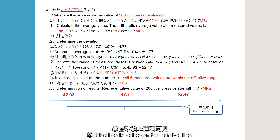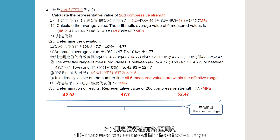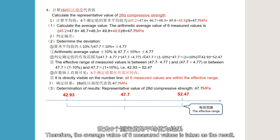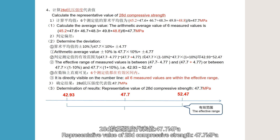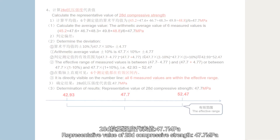It is directly visible on the number line that all six measured values are within the effective range. Therefore, the average of all six is taken as the result. Step 3: The representative value of 28-day compressive strength = 47.7 MPa.